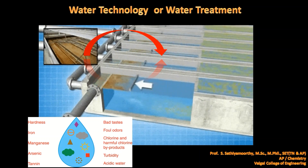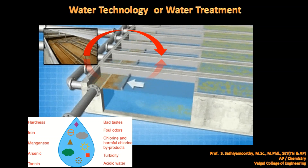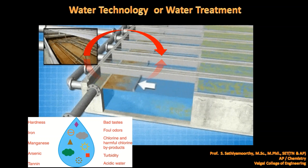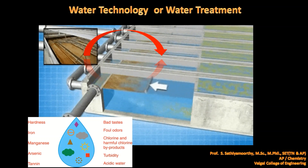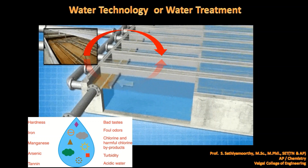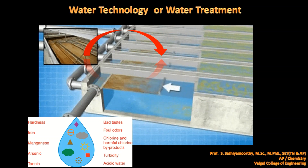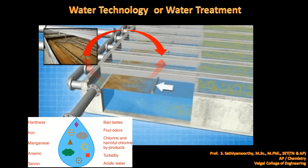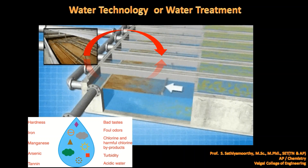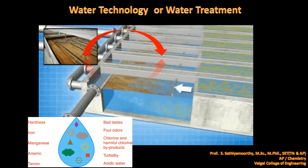We have to make impure water pure in order to use it for domestic and industrial purposes. This is nothing but water technology or water treatment. Water technology is nothing but converting water into a pure form to make it fit for industrial as well as domestic purposes.